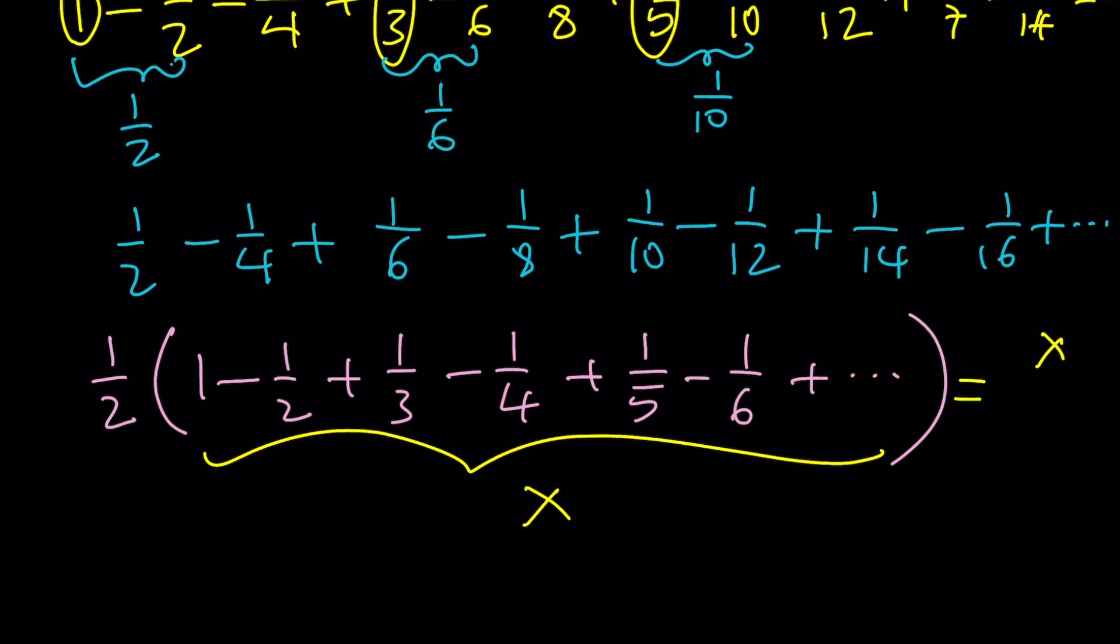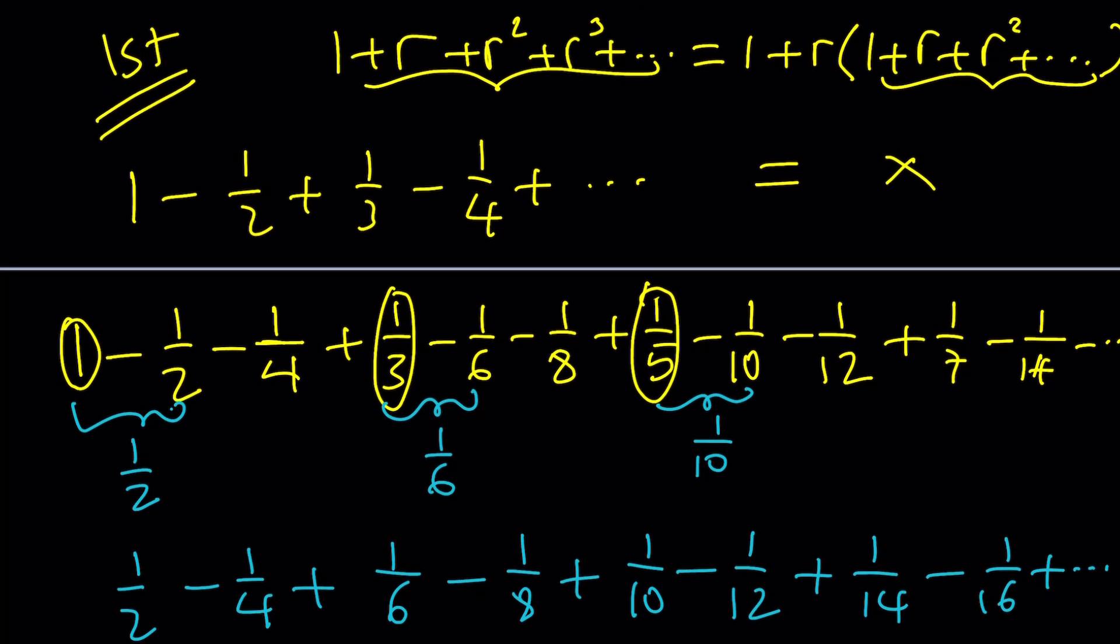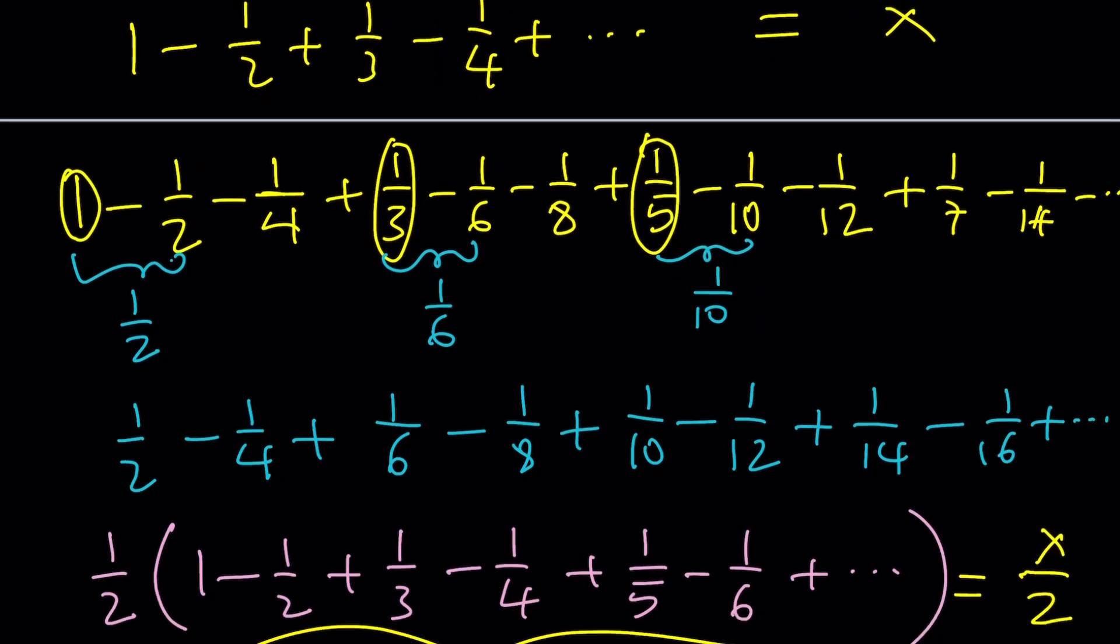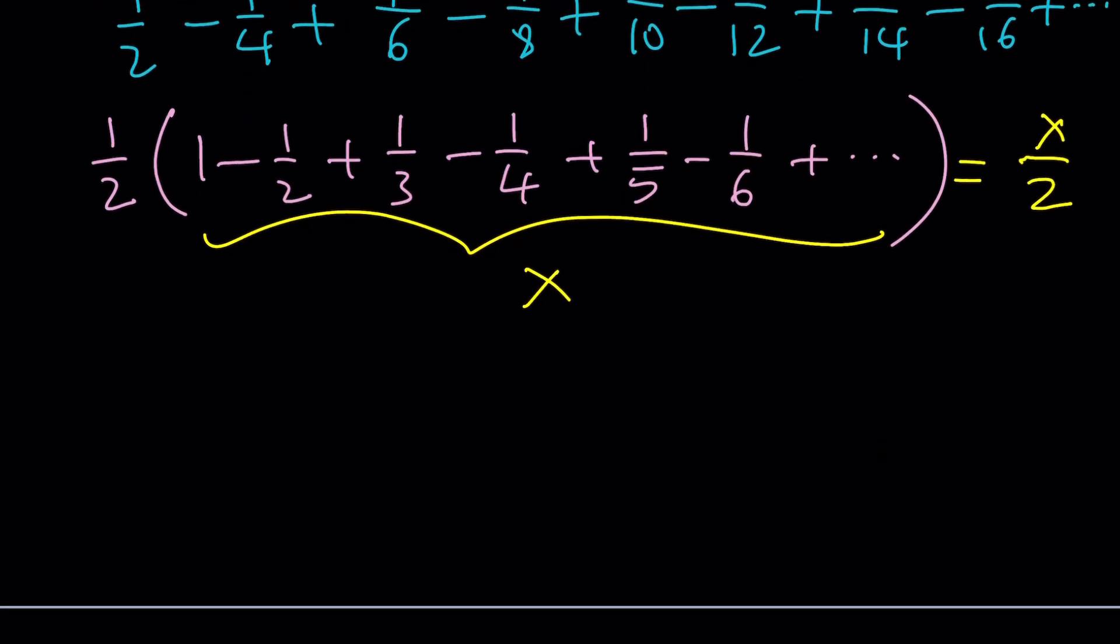What did we start with? We started at x, rearranged the terms, and now we got half of x, which means x should equal half of x. And you know what that means? That means x is equal to 0. Obviously, you should not take this seriously, because I told you that I was going to do something different with the first method. Well, this is not valid. Why?